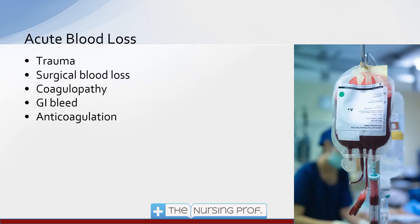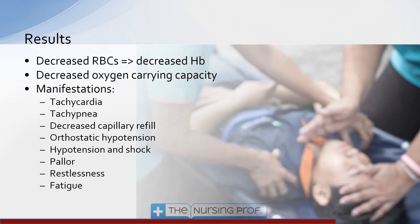Acute blood loss is another way a patient can develop anemia. This could be from trauma, surgical blood loss, or a coagulopathy where the patient is not coagulating properly and is having internal or external bleeding. It could also be a GI bleed or a patient who has been anticoagulated and is experiencing abnormal bleeding.